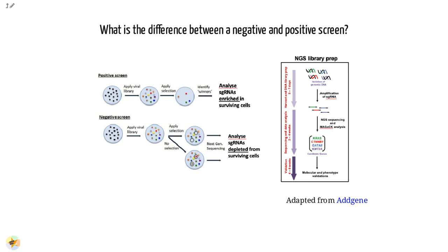With a negative screen, most cells survive after the treatment. In that case, we are interested in identifying genes whose guide RNAs decrease, are depleted, compared to a control, for example vehicle, indicating knockout of those genes increases sensitivity to the treatment. In this tutorial we analyze data from a negative screen.